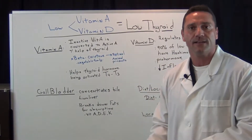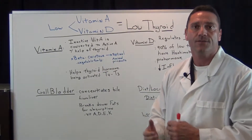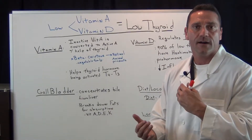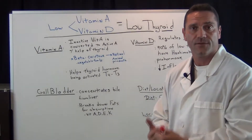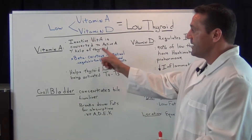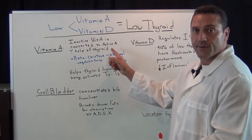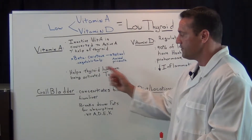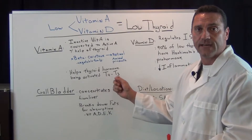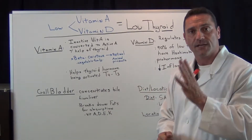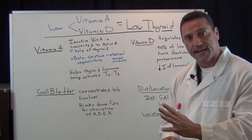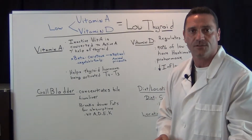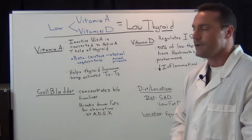We also take in active vitamin A through our animal products — your grass-fed butter, your cod liver oils. With the help of the thyroid gland, vitamin A also helps with the activation of thyroid hormones, specifically the conversion of inactive T4 to active T3. That's one of the key benefits of vitamin A.